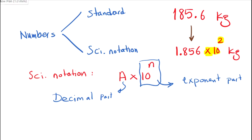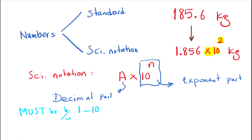For each part we have one condition. For the decimal part, our number must be between 1 and 10. For the exponent part, N must be a whole number — an integer number. It doesn't matter whether it's positive or negative, but it must be a whole number.